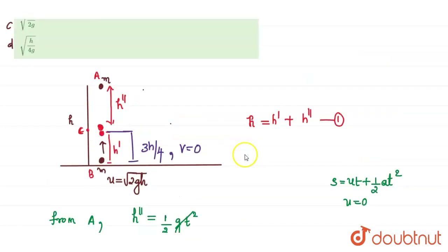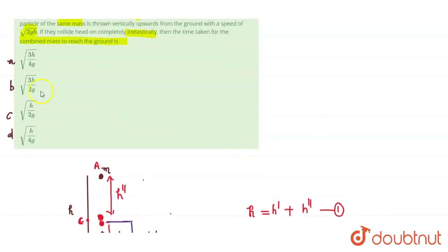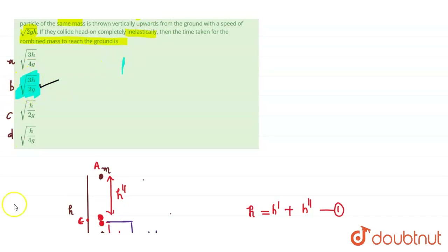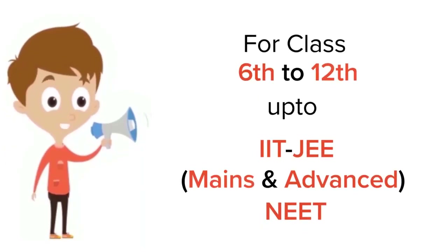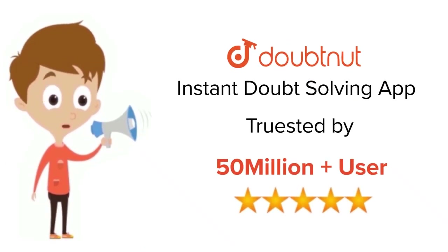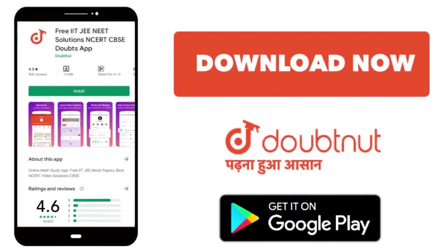So the answer is root(3h/2g), which matches option B. For class 6 to 12, IIT-JEE and NEET level problems, trusted by more than 5 crore students — download the DoubtNut app today.